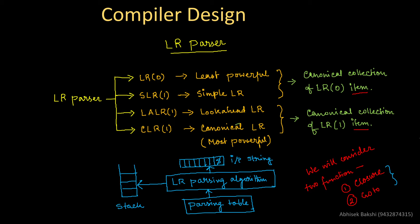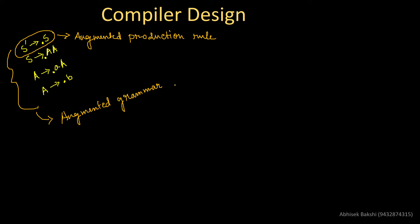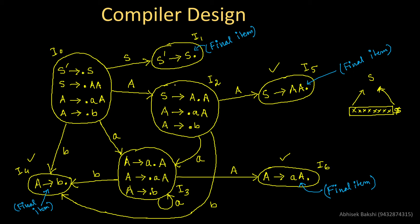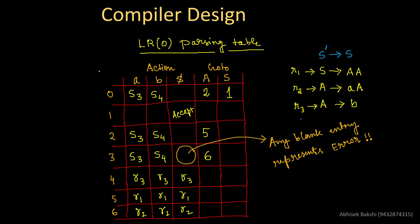Last day we discussed the LR0 parser and how to proceed with LR0 parsing. We design the state diagram first using an augmented production rule — a new production called the augmented production. Then using this state diagram we design the LR0 parsing table, where each cell will be either blank, contain a shift move, or contain a reduce move, noted based on the numbering of the productions in the grammar.